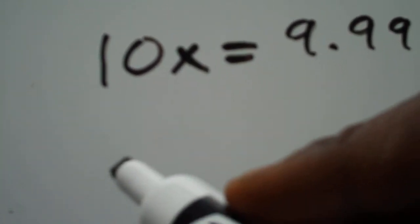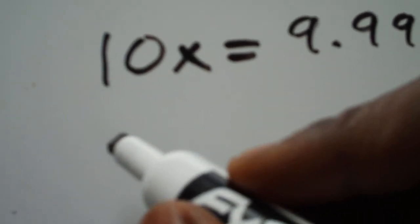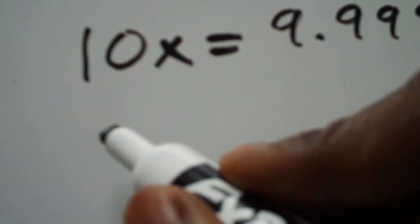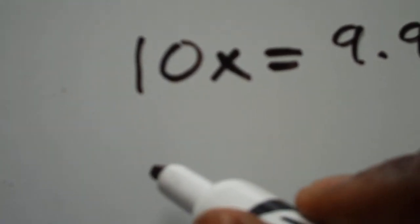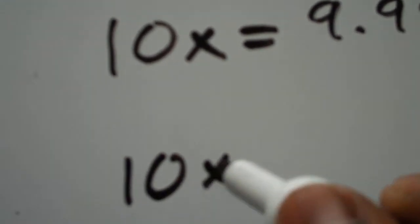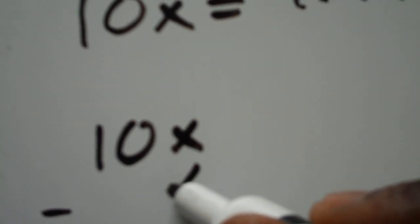Okay, so now we have our x which is point nine repeating and we have our ten x which is nine point nine repeating. So now let's do ten x minus x.